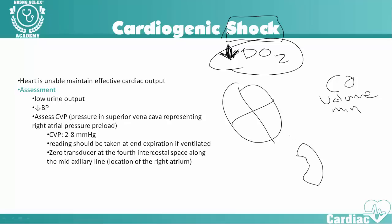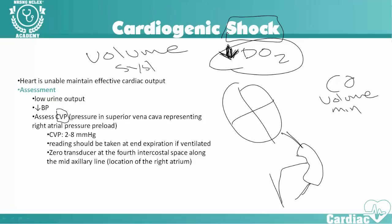For whatever reason, our heart is not beating as it should — it's not maintaining effective cardiac output. Cardiac output is the volume of blood out in one minute. Assessments we might notice include low urine output, because we're not delivering enough blood to our kidneys so they can't work appropriately, and low blood pressure from obviously low cardiac output. The thing we want to assess most is our CVP. CVP tells us the right atrial preload, which basically tells us the overall volume in the system.